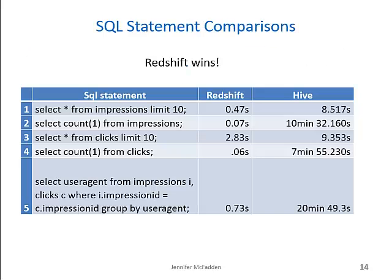So what were the results of my test queries? Redshift won by a landslide. While some queries that select from the top of the data, like SELECT * FROM impressions LIMIT 10, took 8 to 9 seconds in Hive, Redshift was still faster with speeds of less than 3 seconds. The real difference can be seen in more complex queries with joins and GROUP BY statements — Redshift only took 0.73 seconds to run the joined GROUP BY statement, while Hive took over 20 minutes. That's a big difference if you have many statements to run on much larger datasets.